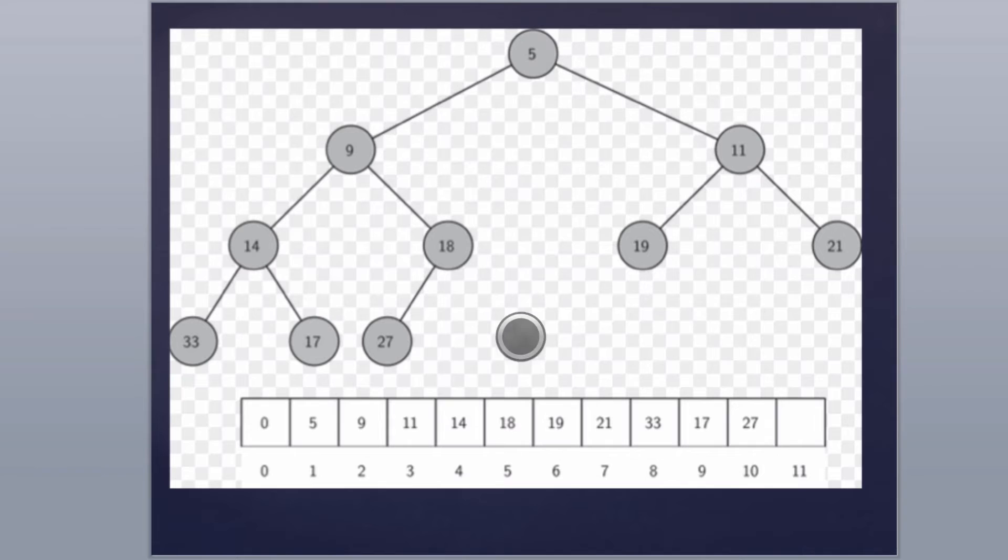But I have 5, 9, 11, 14, 18. And if you can see here, these nodes are going from top to bottom, left to right. So for instance, 5 is the first element, then 9, then I go right, 11. Now I go to the next row, which is all the way on the left. 14, 18, 19, 21, 33, 17, 27.